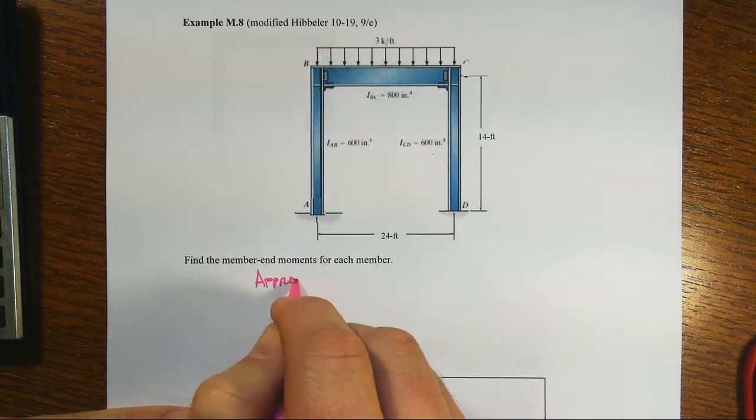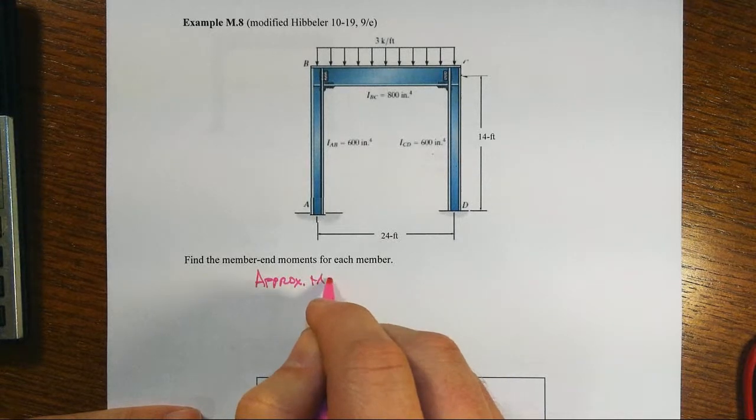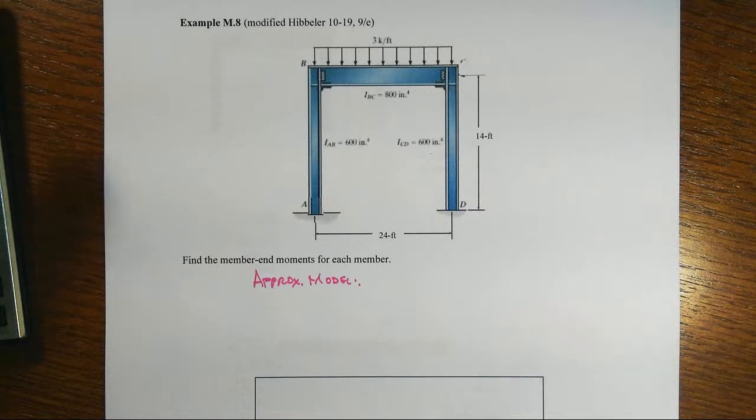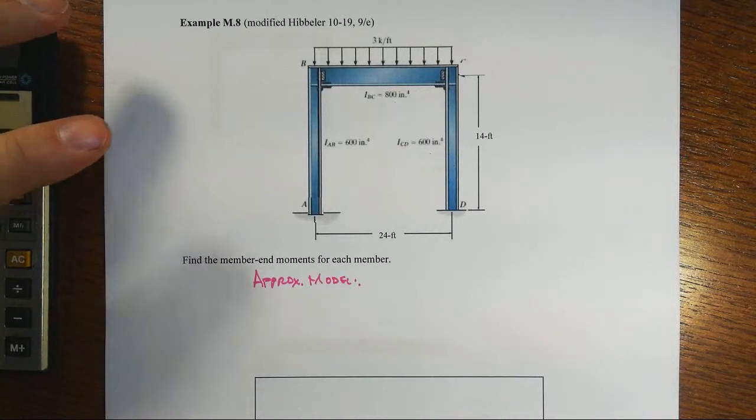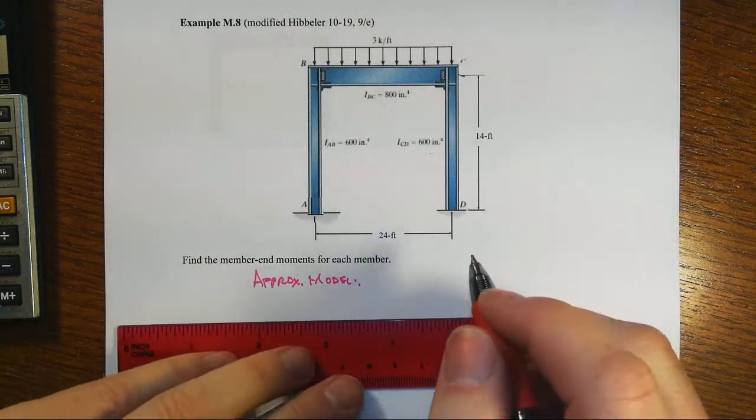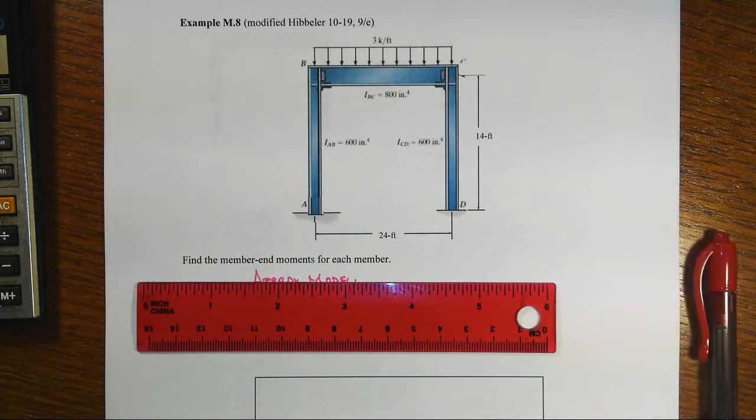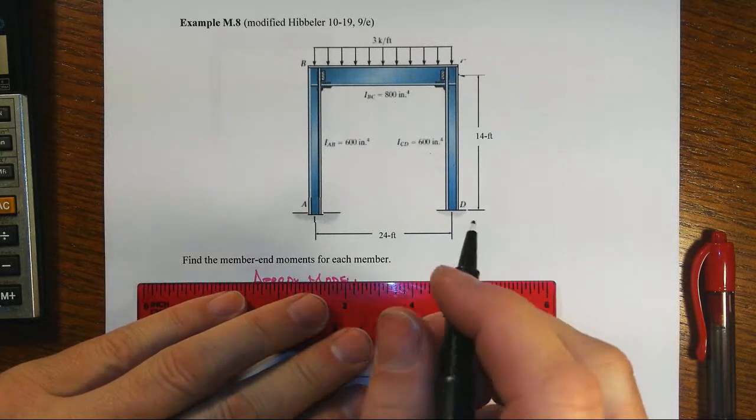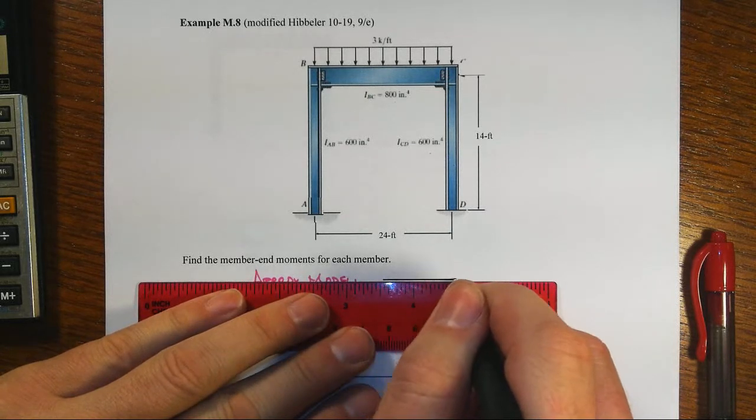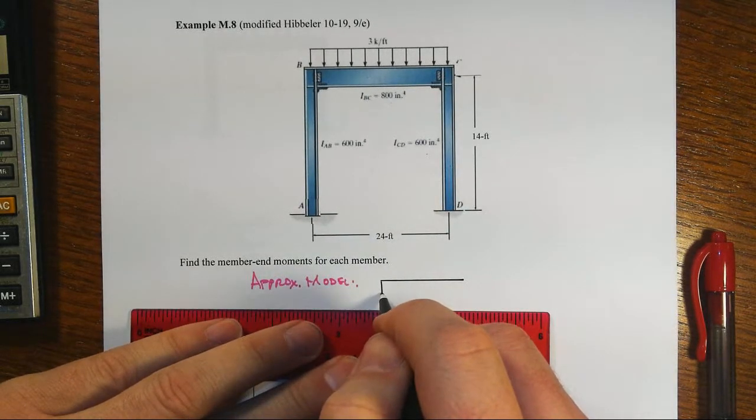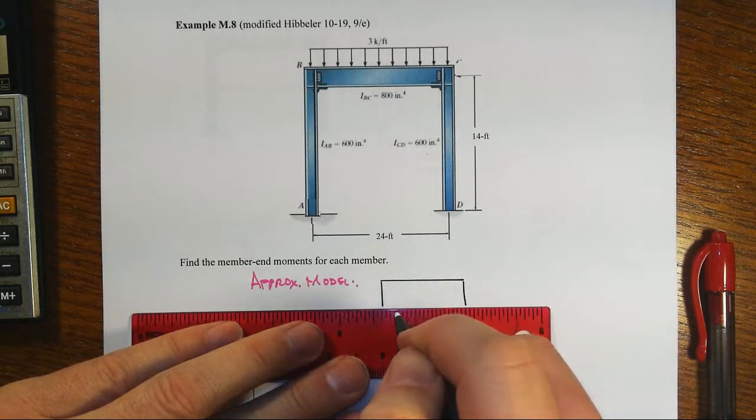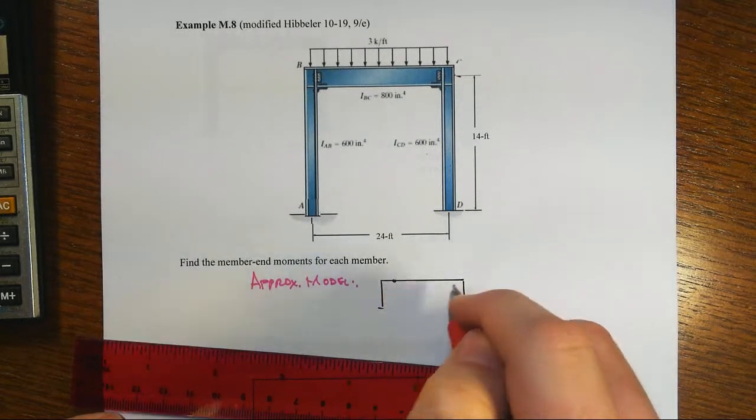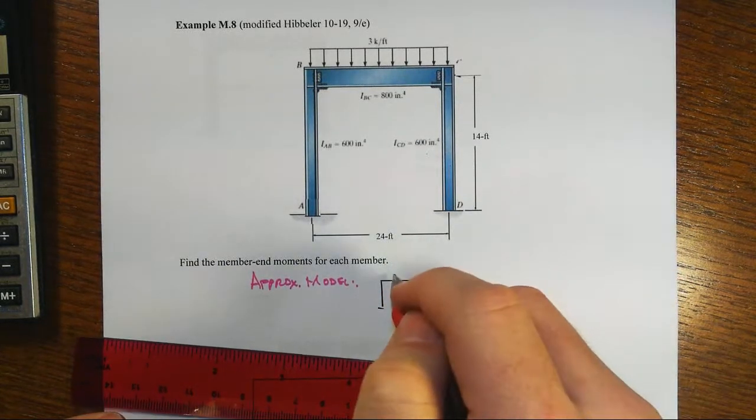In our approximate approach and model, remember what we do often times is say that top beam is somewhere in between pin-pin at the far ends and fix-fixed. In pin-pin, the inflection point would be at the absolute ends and fix-fixed case with this distributed load would be at 0.21L. Our approximation then might be to do something that's in the middle of those two, to take the points of inflection at that one-tenth location.